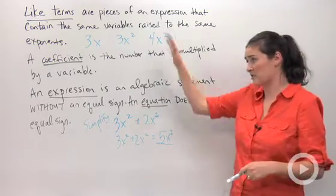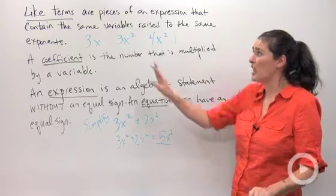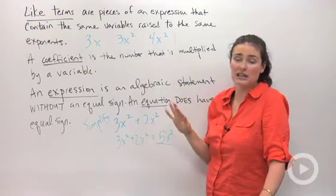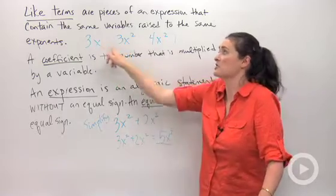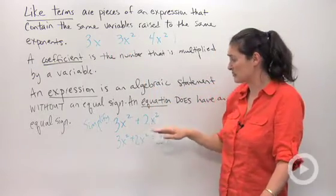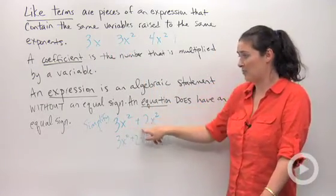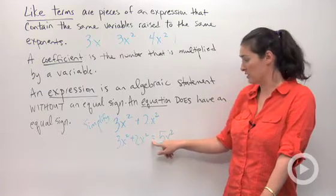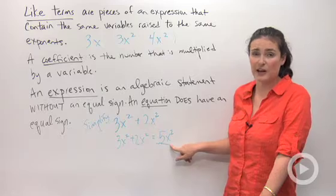So things to keep in mind are these vocabulary words. One more time, with like terms, you're looking at the exponents and their powers only. You don't care about the coefficients. Those can be different. An expression is just a mathematical statement without an equal sign. As soon as I stick an equals to something else, that's when it becomes an equation.